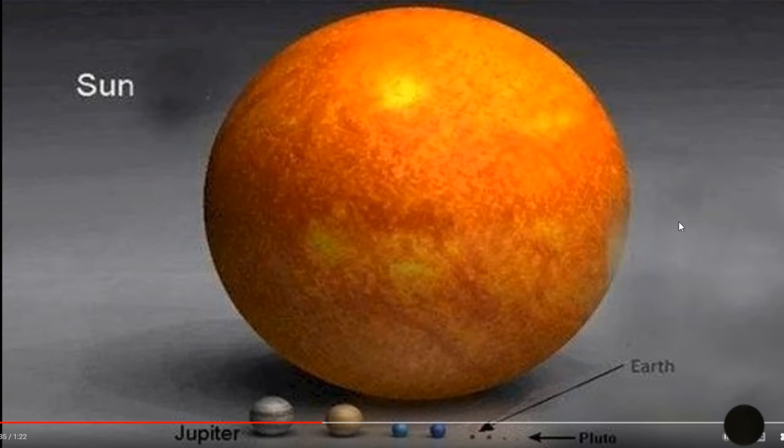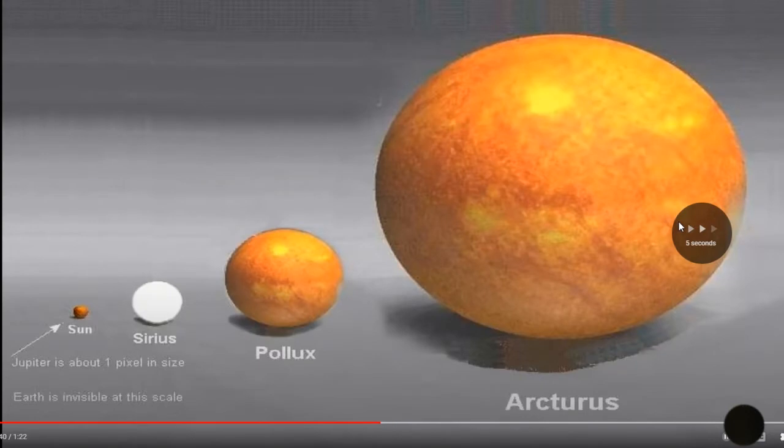As you can see in this one, the Sun is really big. And Jupiter is in one size, and Earth is invisible at this scale.